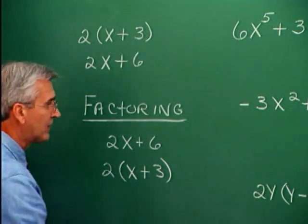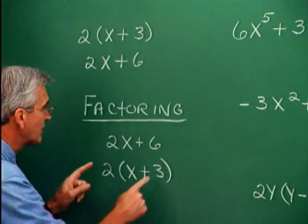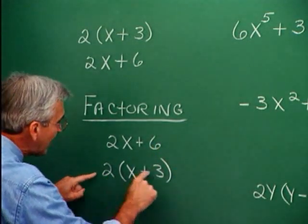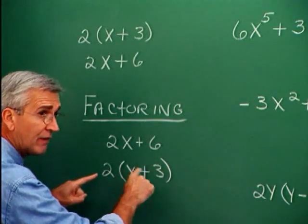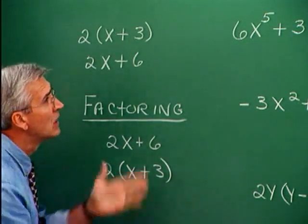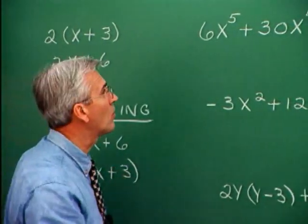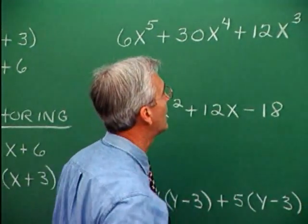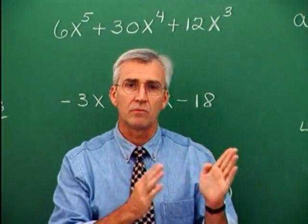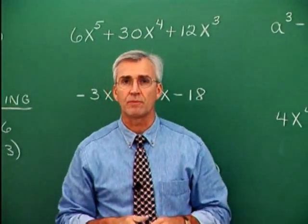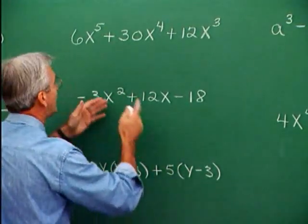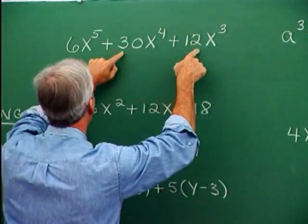One really nice thing about factoring is that we can always check it. If we factor into this form, we can verify the factored form by multiplying it out and confirming we get what we started with. When faced with a more complicated polynomial like this, you want to look at the numbers and the letters almost separately. You want the largest common factor that is common to 6, 30, and 12.